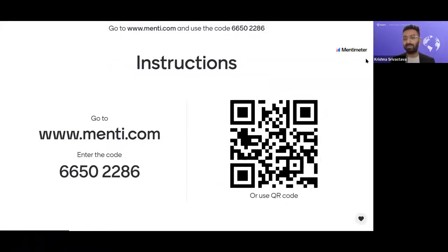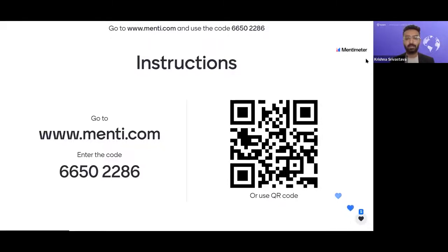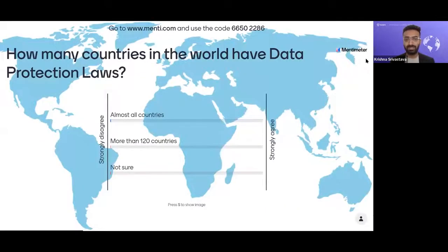If you've been a part of Saru webinars before, we do a lot of Mentimeter sessions where we want our attendees to engage with us. Please go to mentee.com and use the code 66502286 — you will see different questions where we want your inputs. These are obviously related to data privacy; we just wanted your opinion on a certain set of questions to understand how you think about privacy and what your personal perspectives are. The question on screen is: according to you, how many countries in the world have data protection laws?